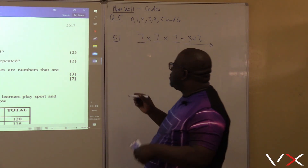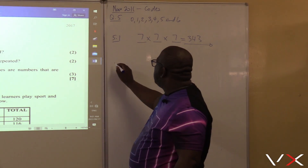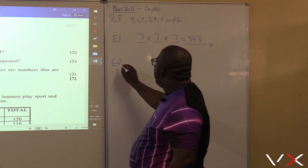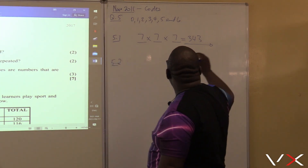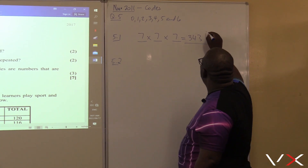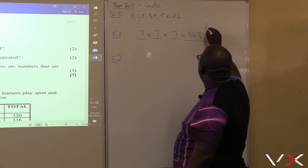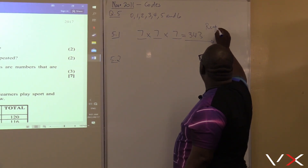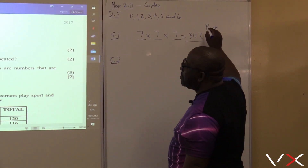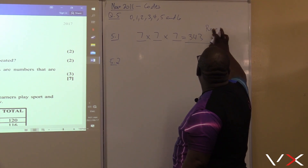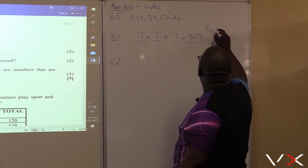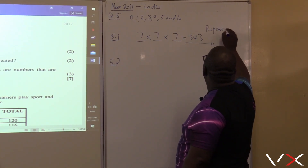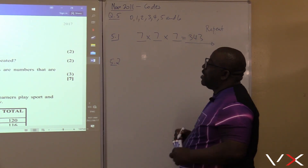Now let's look at 5.2. Remember, in 5.1 repetition was allowed — you can repeat. Now for 5.2, how many unique codes are possible if the digits cannot be repeated?